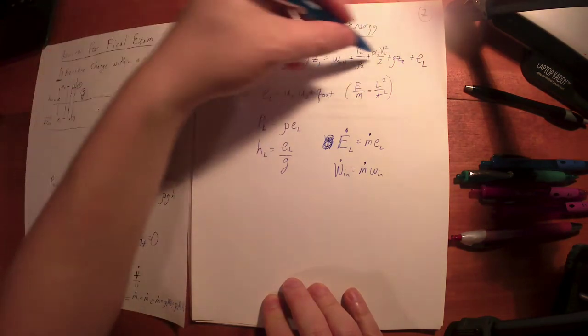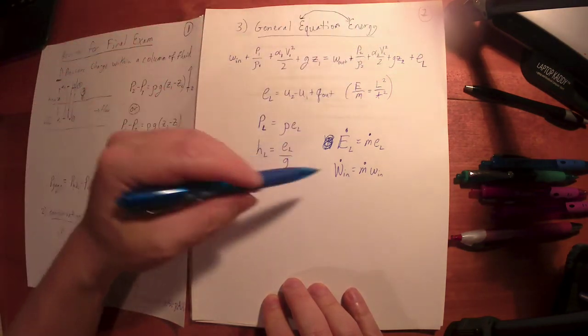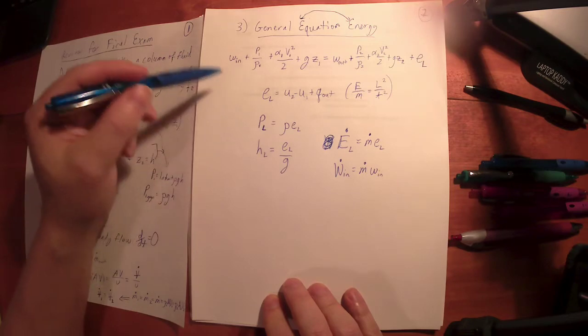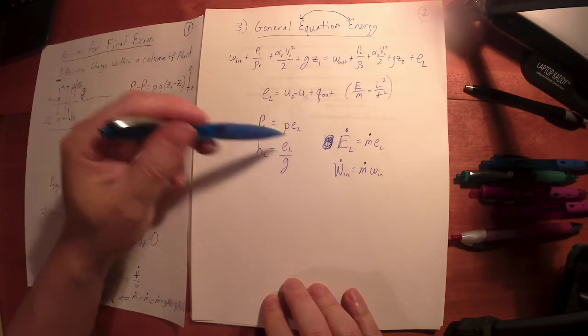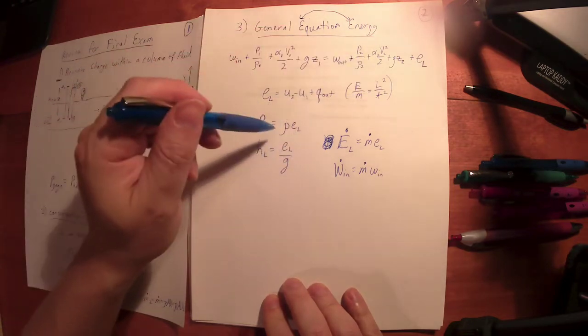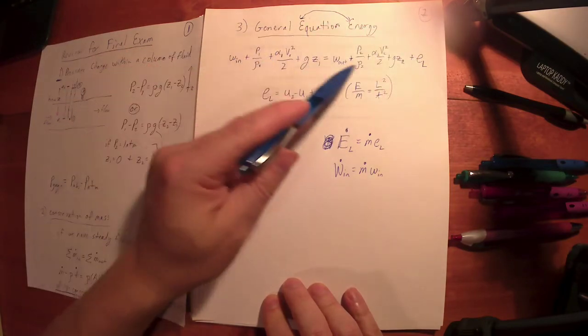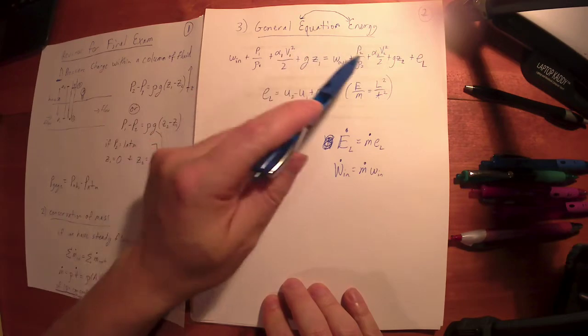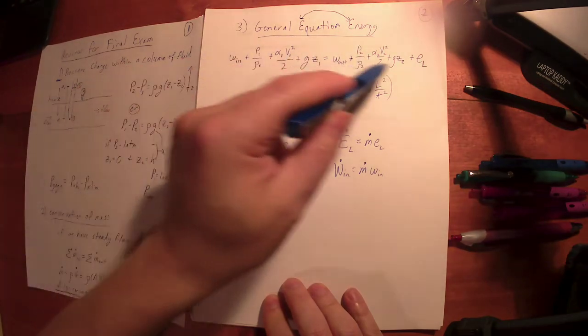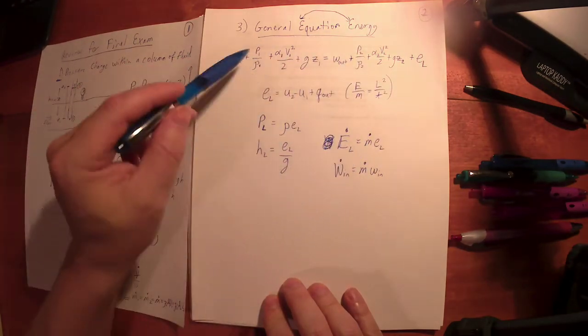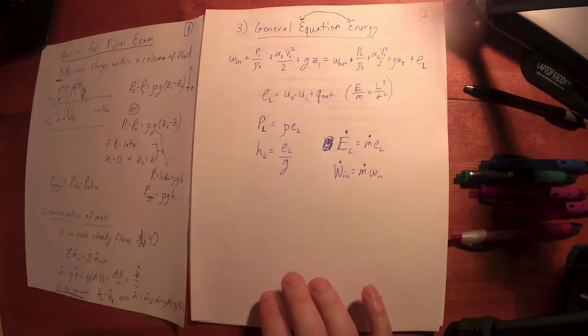So I could rewrite this equation, this entire equation, four different ways. Well, three. This one plus three more. I could multiply each of these terms by density and give pressure terms. I could divide each of these terms by gravity and get head terms. I can multiply the entire equation by m dot and get power terms. And it's the same equation.